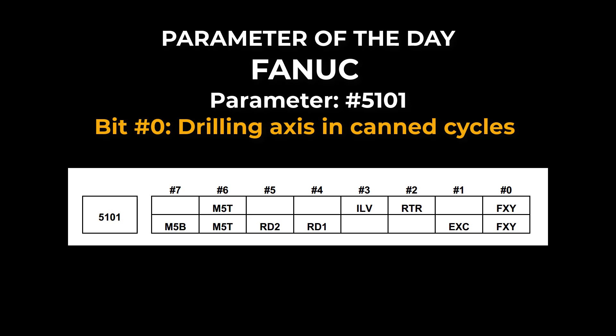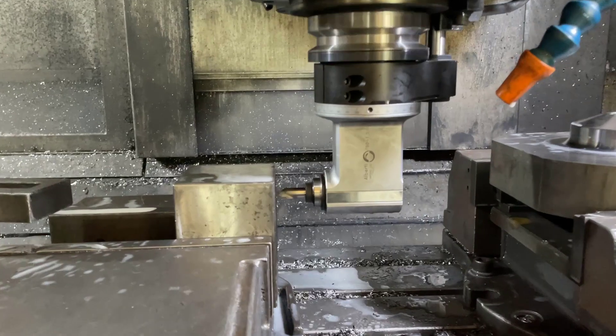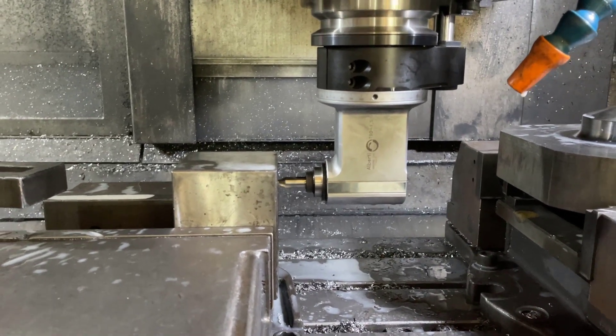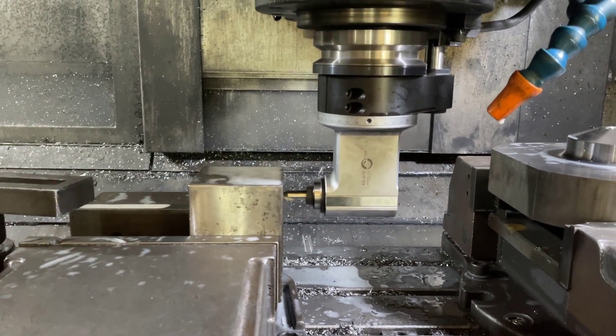I want to try the first one with the FANUC control. The parameter number is 5101, and we're talking about bit 0. This bit is called 'drilling axis in canned cycle.' You can see it here — parameter 5101, bit 0. The name is FXY. We're going to see how that works. This is available in some newer FANUC controls; for all FANUC controls, you need to check your manual to see if you have the same parameter number or a different number with the same function.